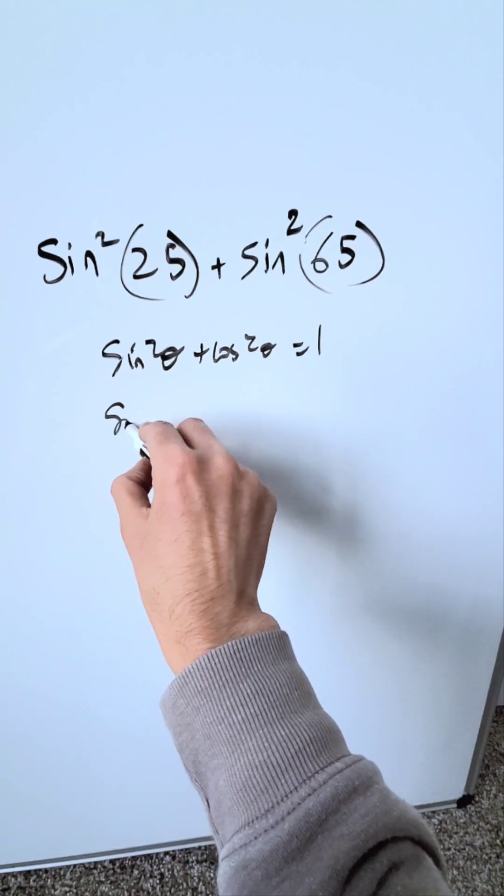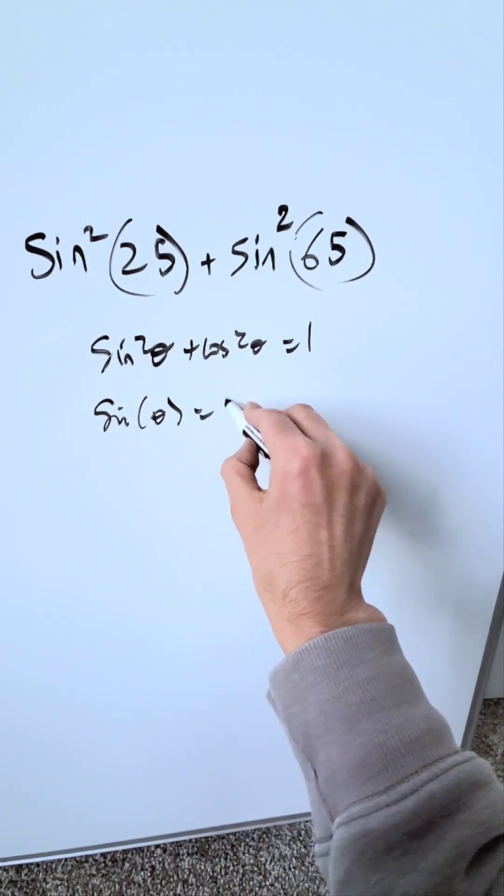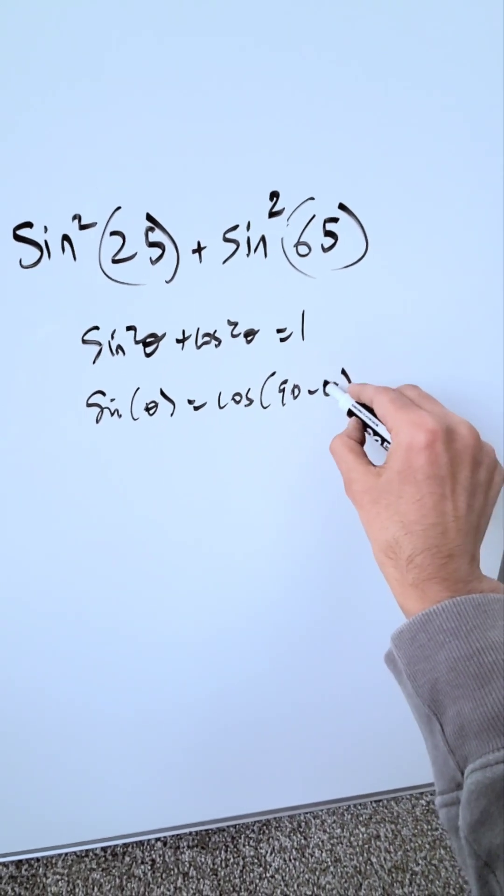And think of the other co-function identity, which is the sine of an angle is always equal to cosine of its complement, 90 minus theta.